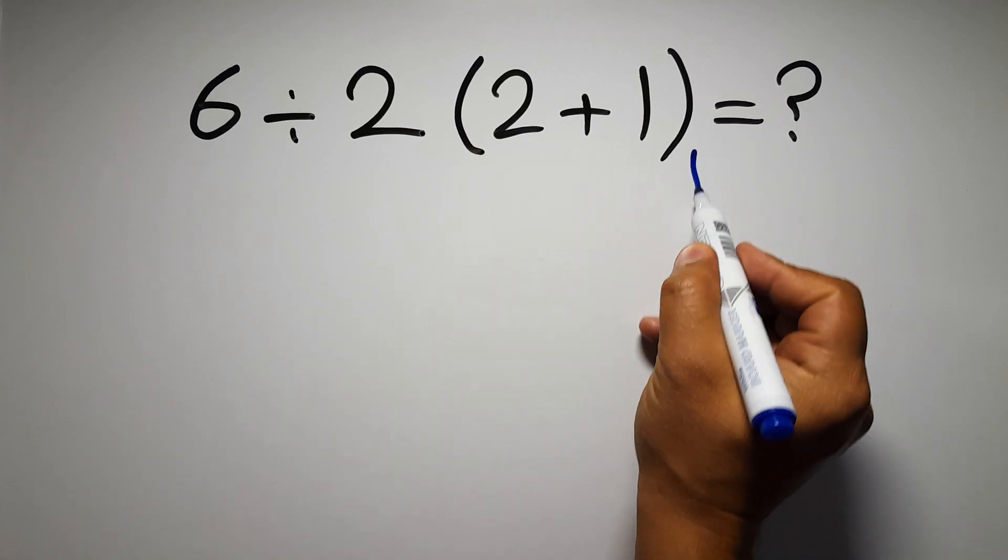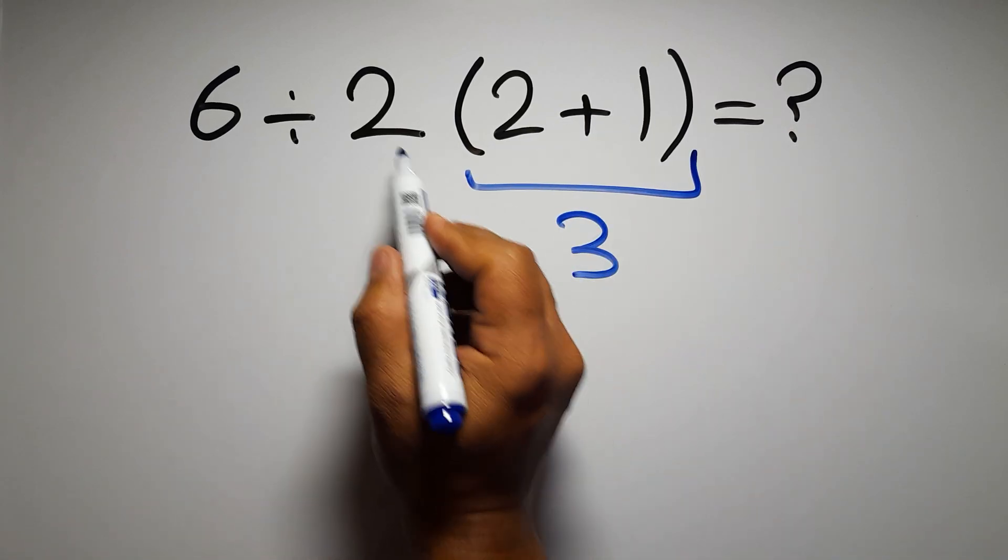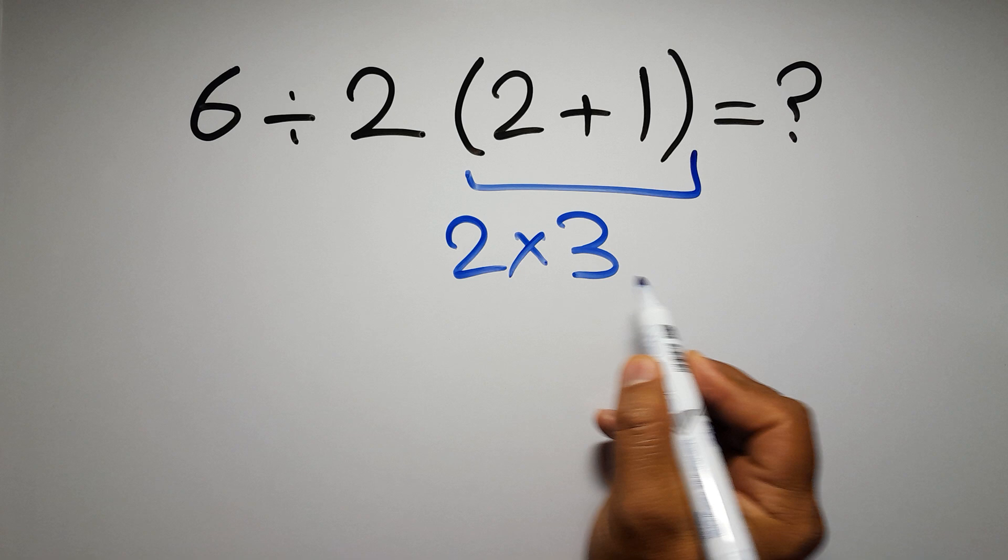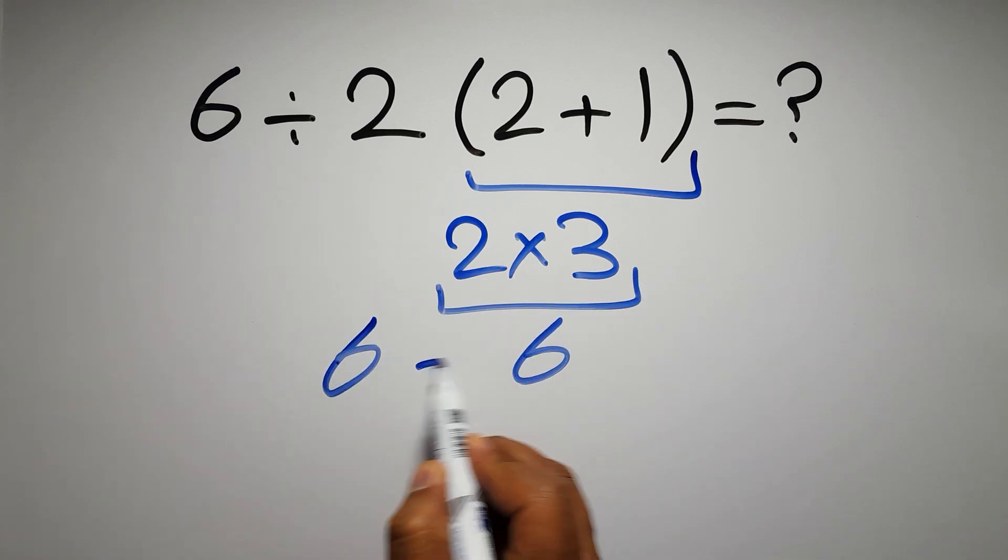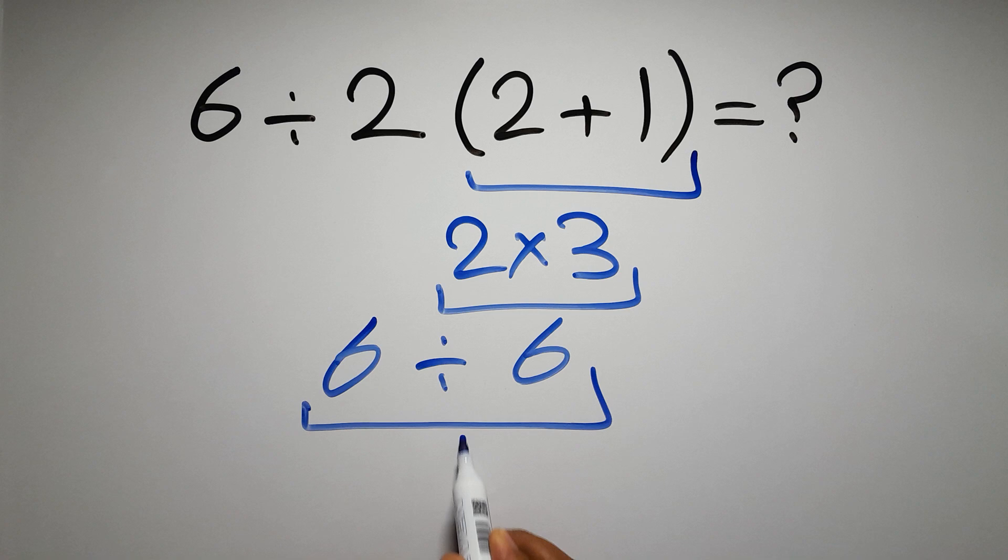2 plus 1 gives us 3, and 2 times 3 is just 6, so 6 divided by 6 gives us 1, but this answer is not correct.